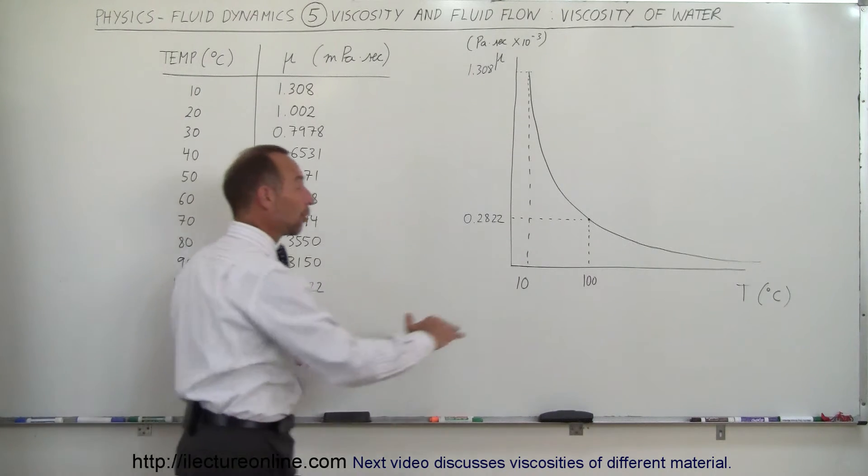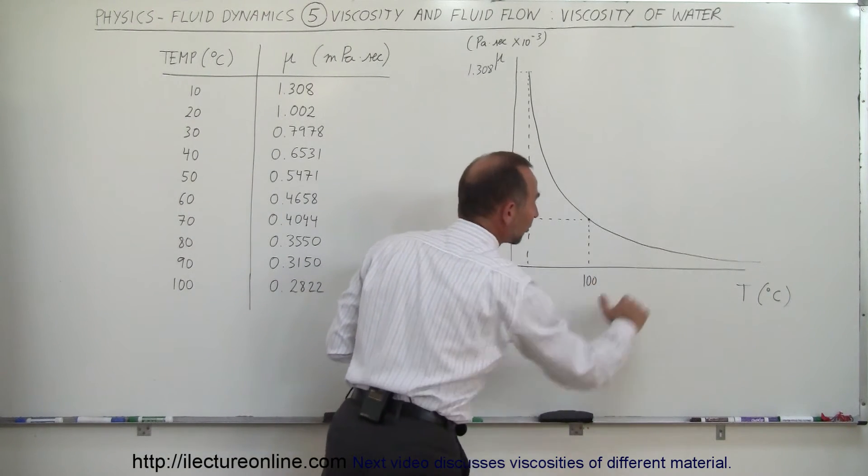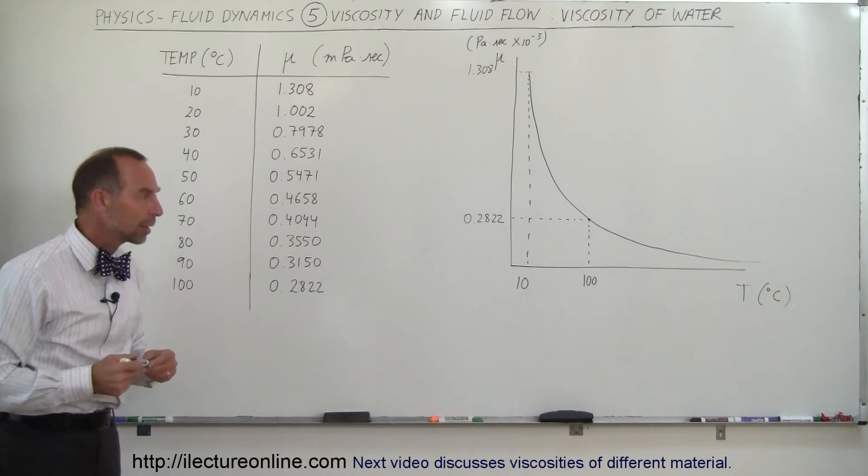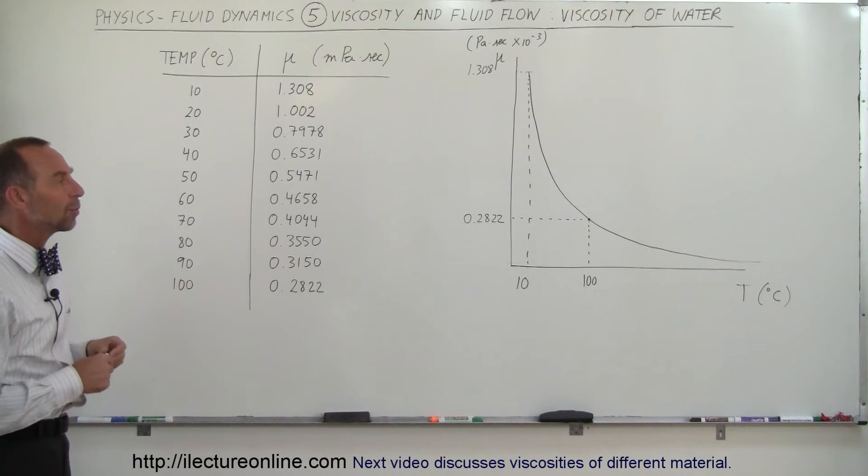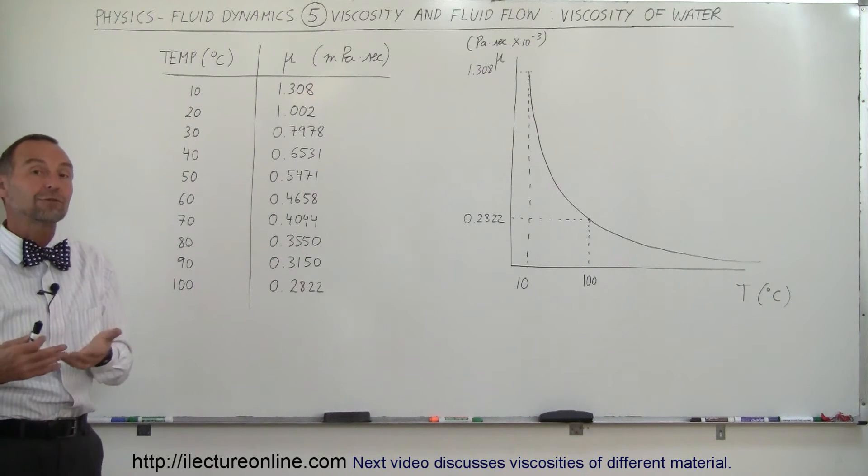Viscosity of water vapor would be very, very small because all gases have a much lower viscosity than liquids. But the typical curve that we see there, the 1 over x curve that we see for water, is very typical for all fluids.